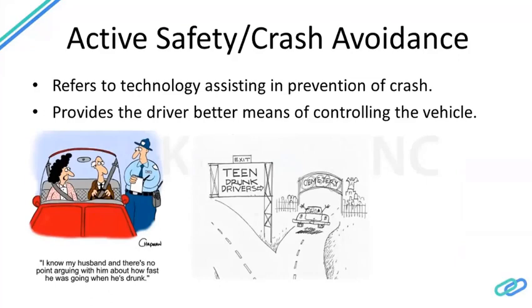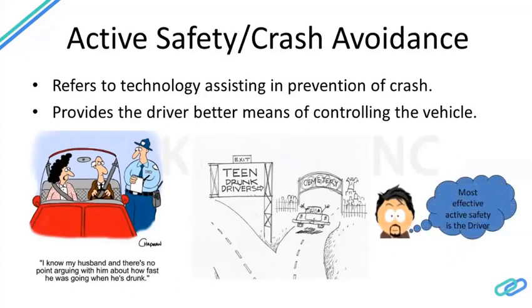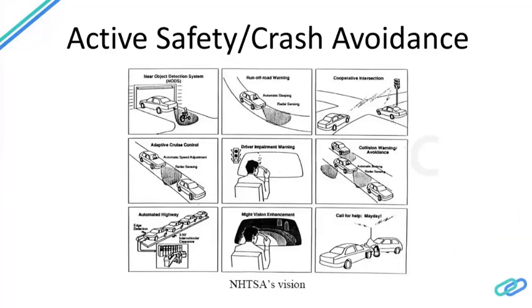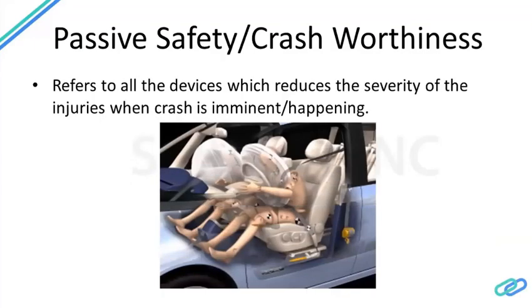Crash avoidance is called active safety, which refers to technology assisting in preventing a crash and various other factors aiding the driver. The driver is the most responsible person to avoid a crash, so the driver is always part of the crash avoidance system. Examples of active safety technologies currently in use include automatic emergency braking, lane warning systems, and ABS anti-lock braking systems.